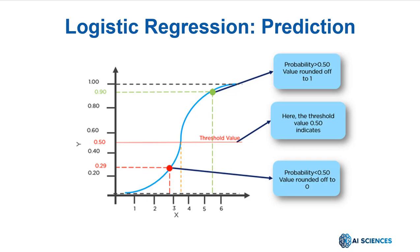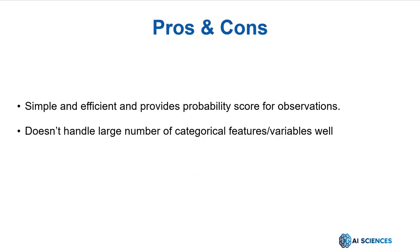Compared to other models, logistic regression is rather simple and efficient. However, it can't handle a large number of categorical variables successfully.